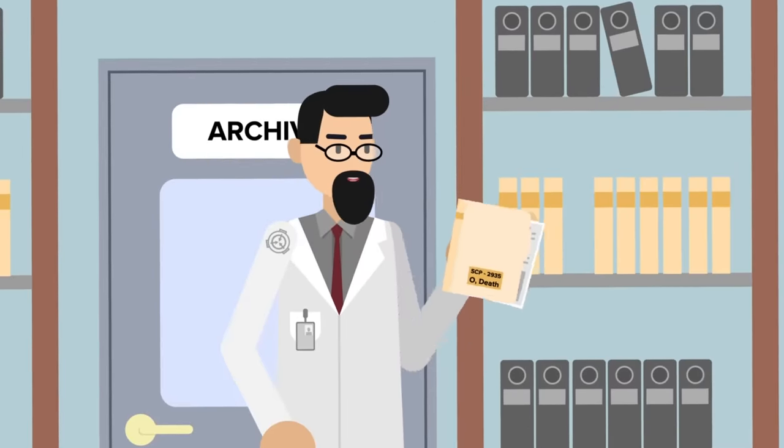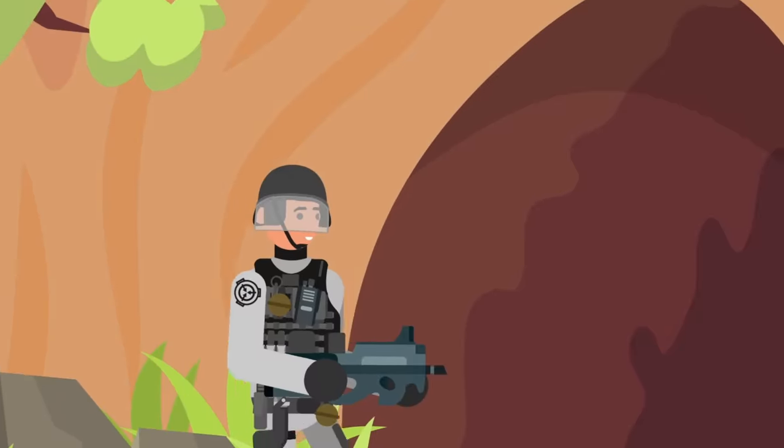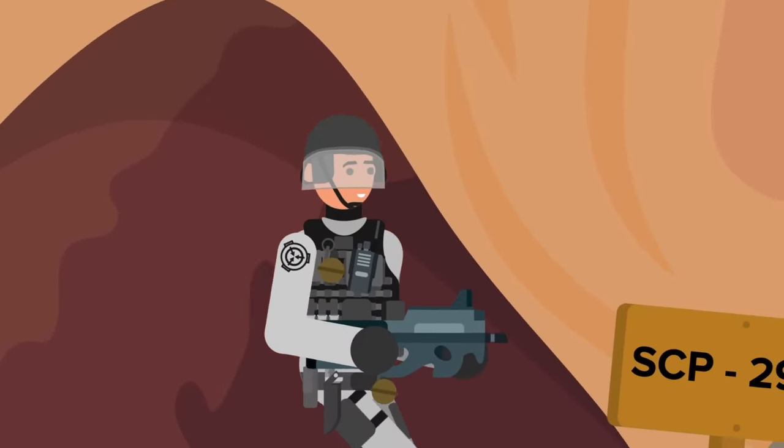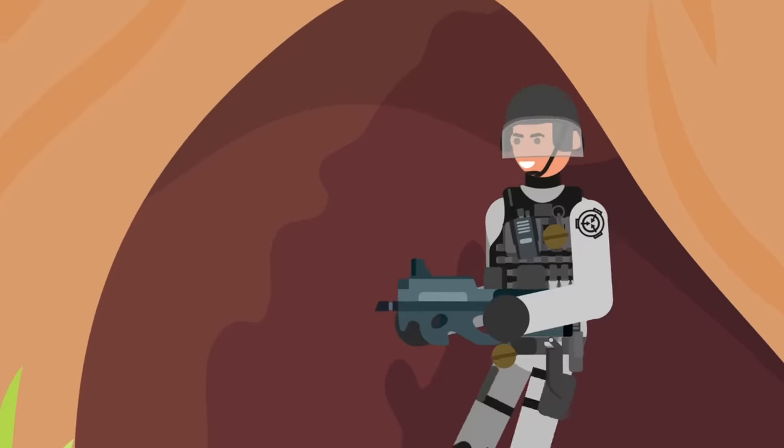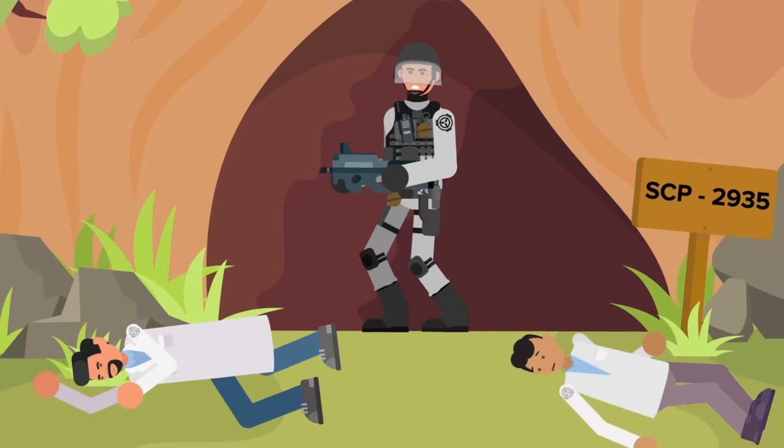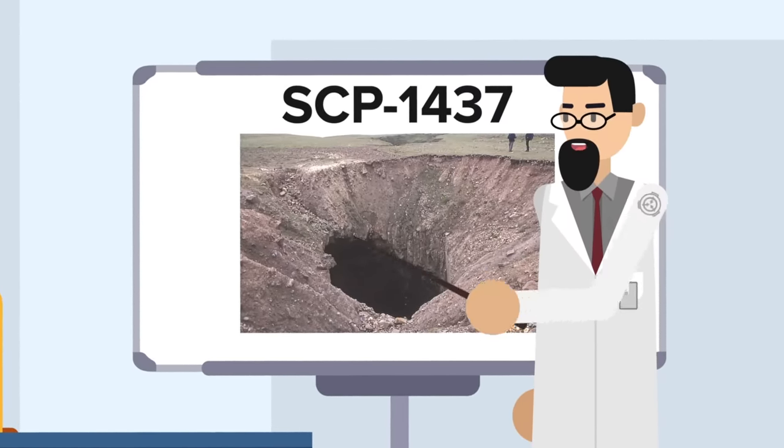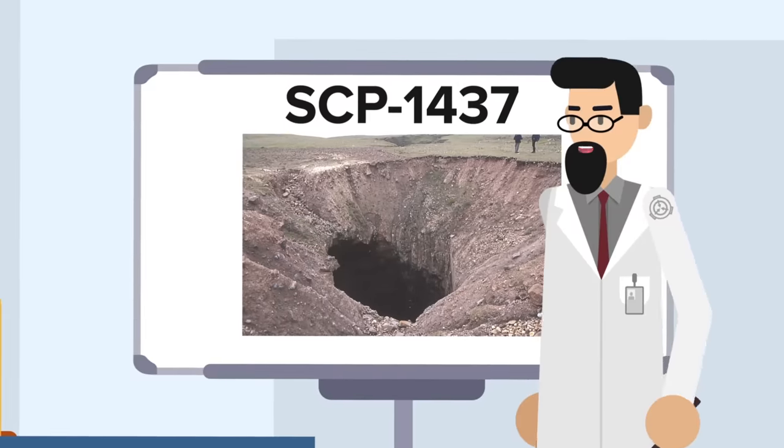We're familiar with the SCP Foundation's run-ins with the multiverse. From SCP-2935-0 Death, a cave that allows the Wanderer to enter a parallel dimension that's fully and completely dead, only for the same thing to happen to their own world once they return through the cave, or SCP-1437, a hole that allows the Foundation to send, receive, and read parallel dimensional documentation from other multiversal SCP Foundations.